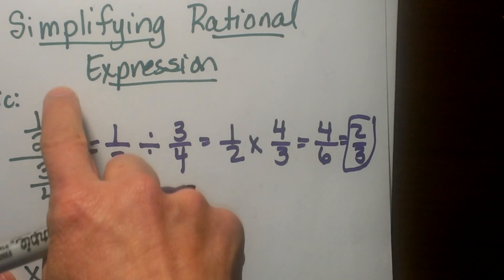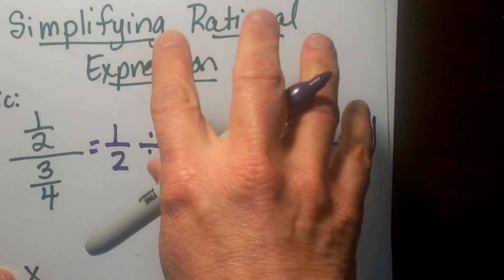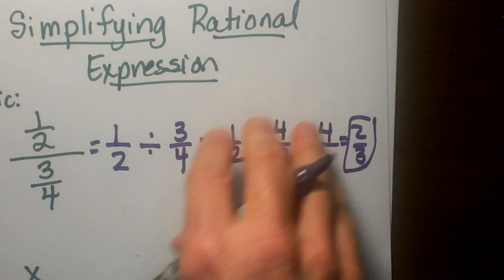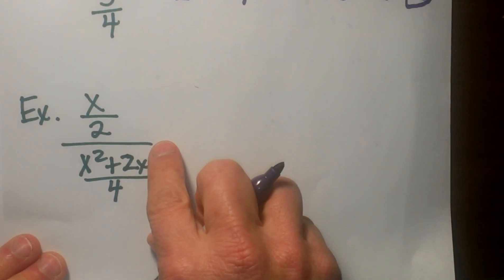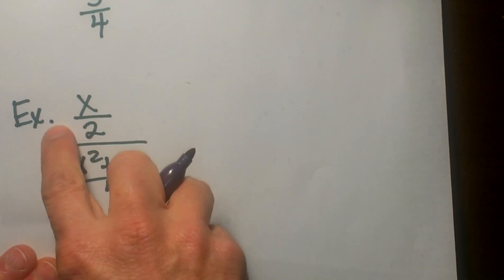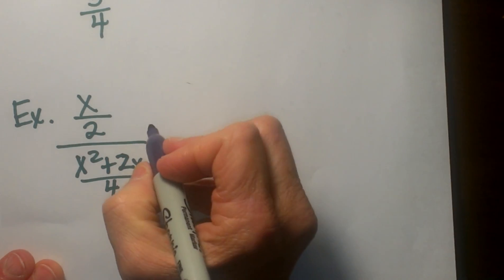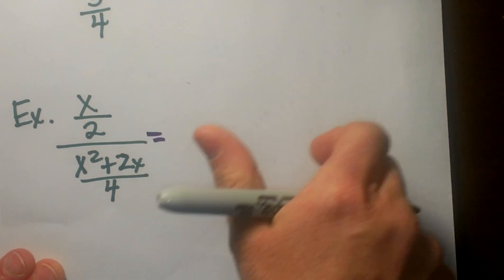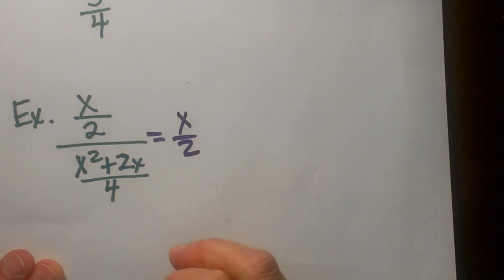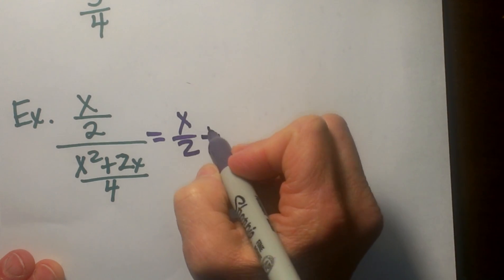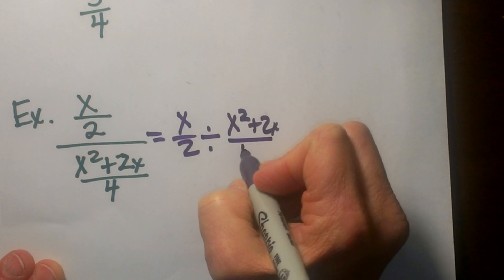When we divide one half divided by three fourths, our answer is two thirds. Now let us take this concept and apply it to rational expressions. Same concept applies — we have a fraction divided by another fraction, so we are going to write it from a double stack to a long problem: x over two divided by x squared plus two x over four.